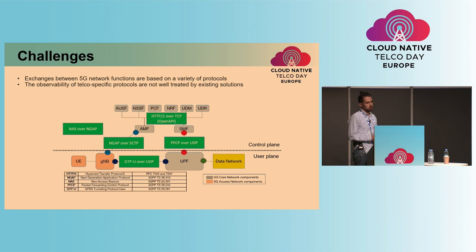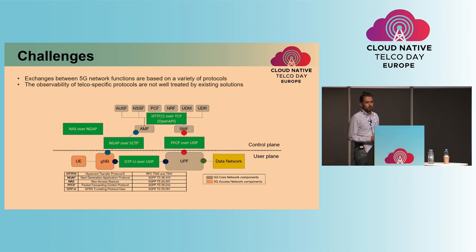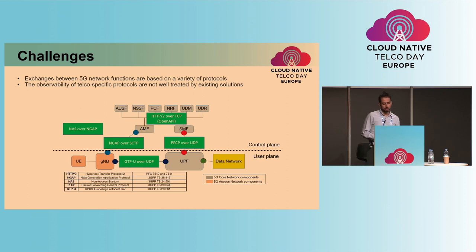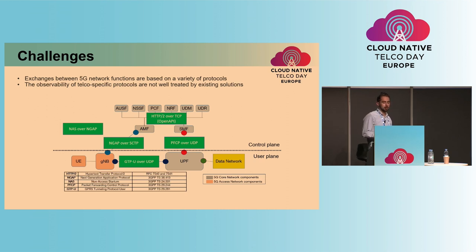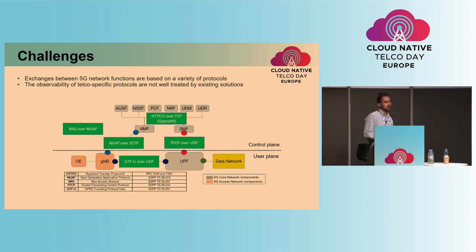First, to ensure a good level of performance by tracking, for example, the error rate and the request processing time. But also, to get information about the global state of the 5G system, like the number of attached users and the number of created video sessions. 5G network functions communicate with each other using a variety of protocols — some originating from IT, like HTTP, while others are telecom-specific and defined by 3GPP specifications, like NGAP and PFCP for signaling messages, and GTPU to forward end-user traffic.